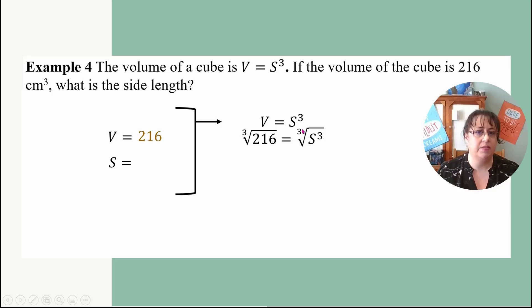So now I have S cubed. So how do I undo a cube? Well I undo a cube with a cube root. So this cube and this cube root undo each other. So I'm going to be left with an S right here. But this 216 and this cube root, I'm going to have to undo that somehow. So I have this 216 and I'm going to go ahead and I'm going to do a factor tree with that.